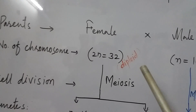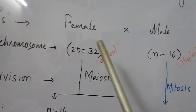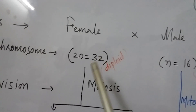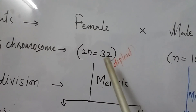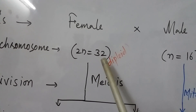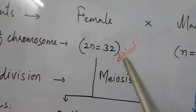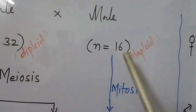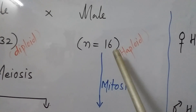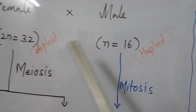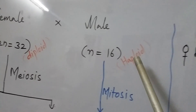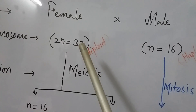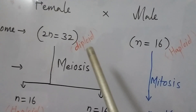Let's understand what happens with the female and the gametes of the male. The parent female honeybee contains the full number of chromosomes, that is 32, and hence it is diploid. The male honeybee, the drone, consists of only half the number of chromosomes, that is 16, and hence it is called haploid. So the male is haploid and the female is diploid in the honeybee.